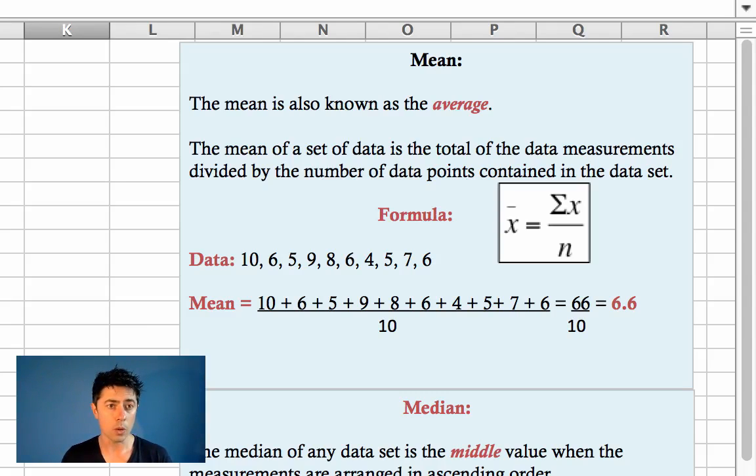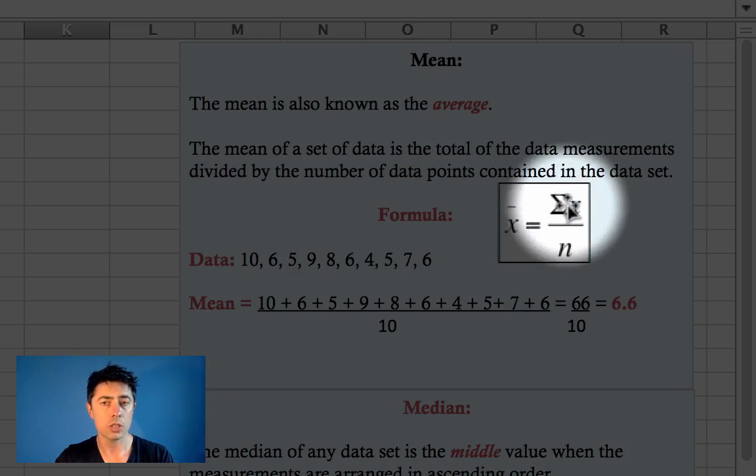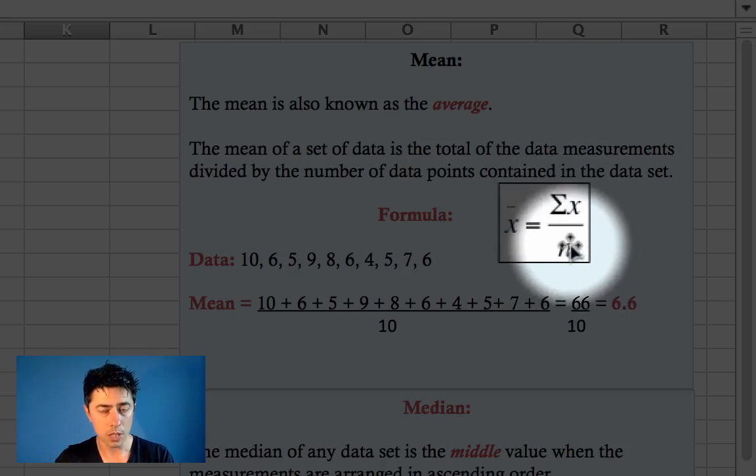Let's have a look at an example before we go on to our car speed example. Up here on the right, we have a formula for the mean, simply represented by x bar. So the mean is equal to the sum of x, which are the values that we have, and we divide it by the number of values that we have.